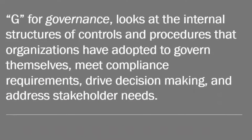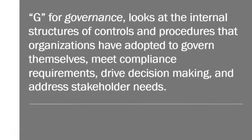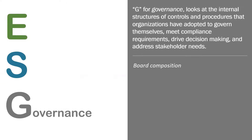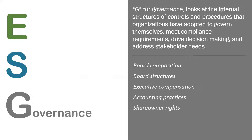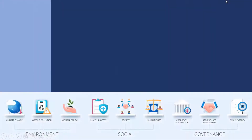Now let's take a look at the governance side — the G in ESG. This is looking at your internal structures and controls, your procedures that you have adopted to govern yourself, to meet compliance requirements, drive decision-making, and address stakeholder needs. This could include things like board composition, board structures, executive compensation, accounting practices, shareholder rights, and our transparency in reporting, as well as bribery and corruption. This is the part we're going to focus on — how we can create that governance framework using current frameworks we have in the market.